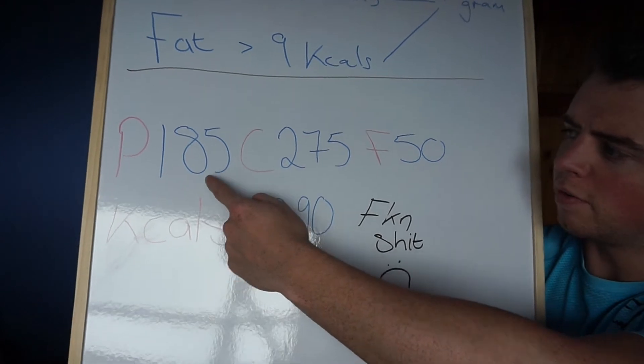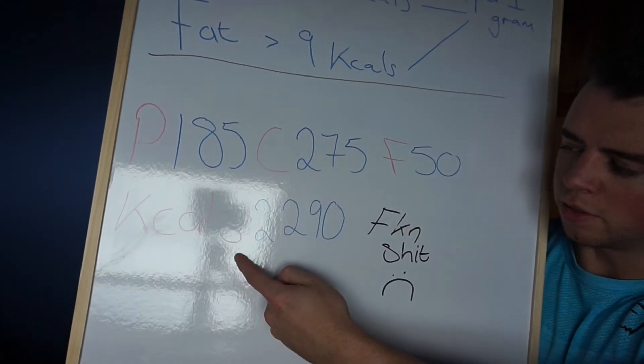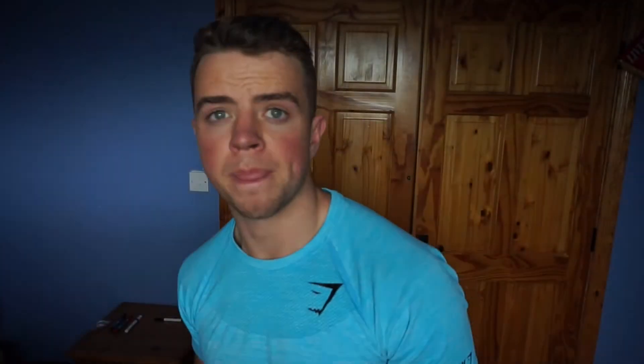My macronutrient targets are: protein 185g, carbs 275g, fat 50g — that all equates to 2,290 calories. As long as I hit those macros at the end of the day, it's cool to eat whatever I want. You could have a chicken milkshake for breakfast, pizza for lunch — but hold up, everybody still has to hit their macronutrient target and get their vitamins and minerals from different meats, veg, and fruit. You still gotta get your broccoli, asparagus, beans, red meat, chicken, sweet potatoes, and rice in.